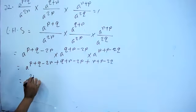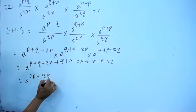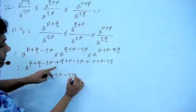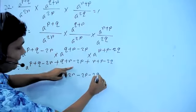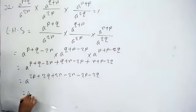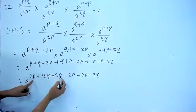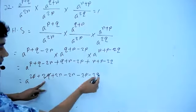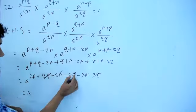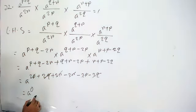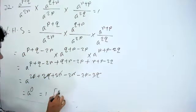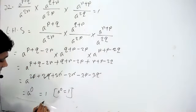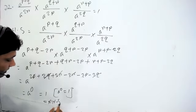Now we combine: p+p cancels 2p, q+q cancels 2q, r+r cancels 2r. So we get a^(p+q+r-2r+q+r-2p+r+p-2q), which equals a^0, which equals 1.